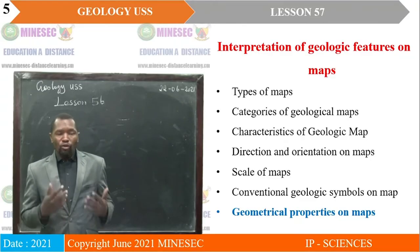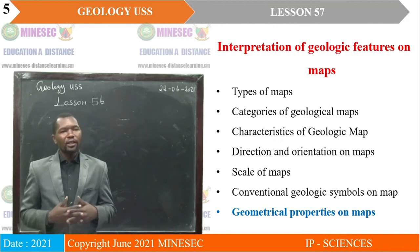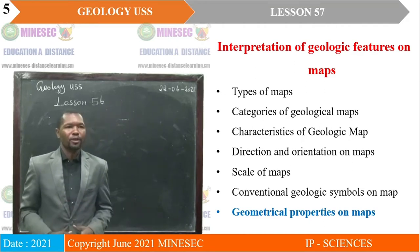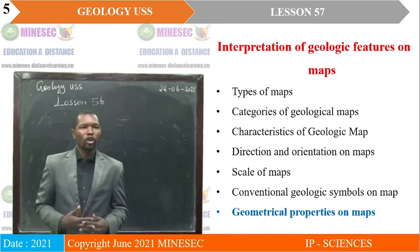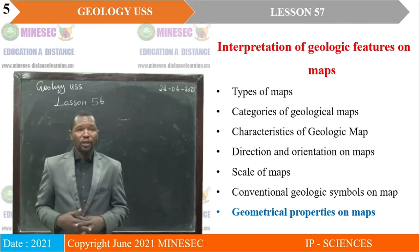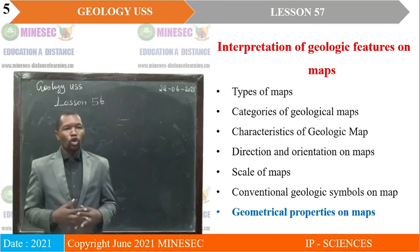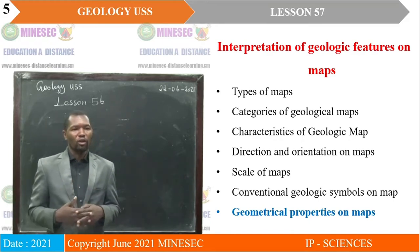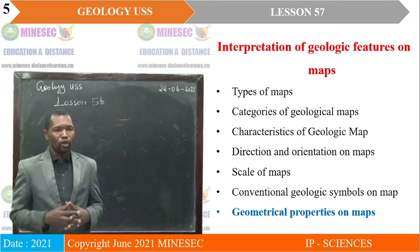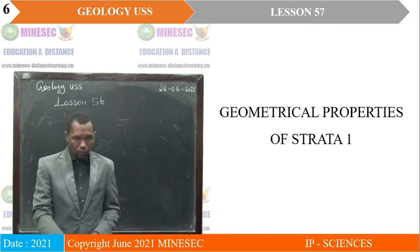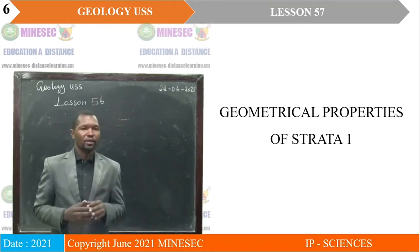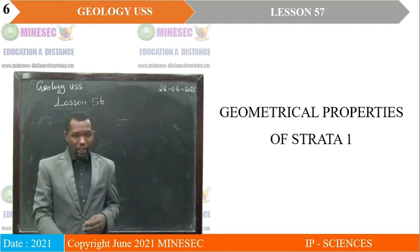We will continue with map work under the subsection on interpretation of geologic features on maps. We have already seen types of maps, categories of geological maps, characteristics of geologic maps, direction and orientation on maps, scales on maps, and conventional geologic symbols on maps. Today, we begin looking at geological properties of maps or strata. Lesson 57 is titled Geological Properties of Strata 1.